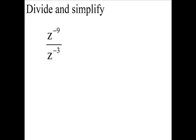Okay, we want to divide and simplify. So I have z to the minus 9 over z to the minus 3. So if we simplify this,